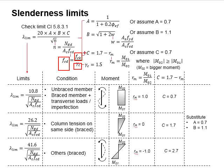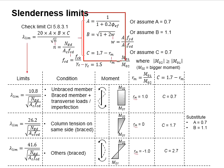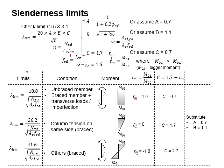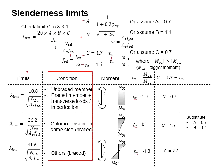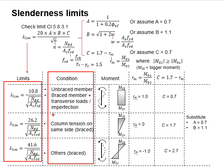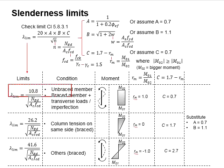The design stress is a function of the characteristic strength divided by the factor of safety for concrete, which is 1.5. As for factors A, B, and C, the equations are given here. These factors are normally assumed to be 0.7 for A, 1.1 for B, and 0.7 for C.